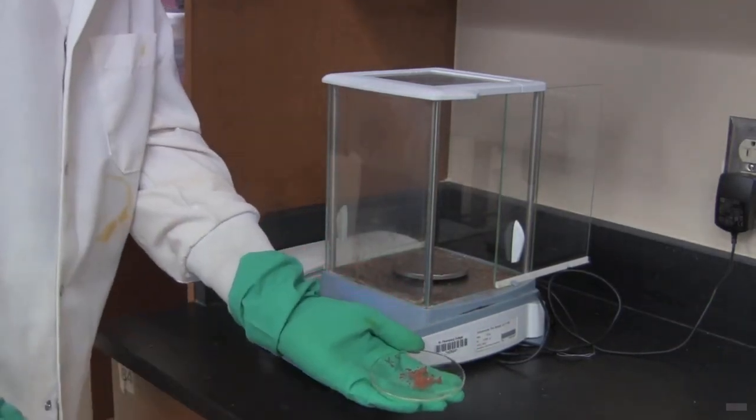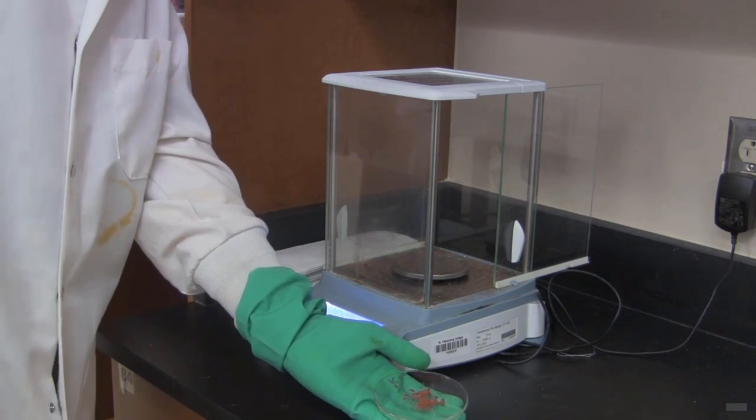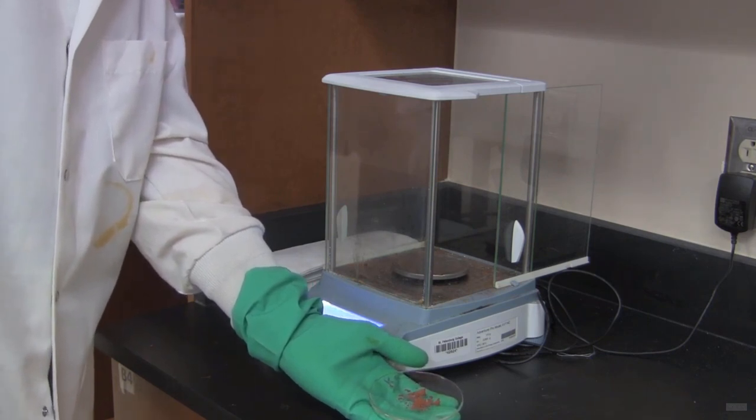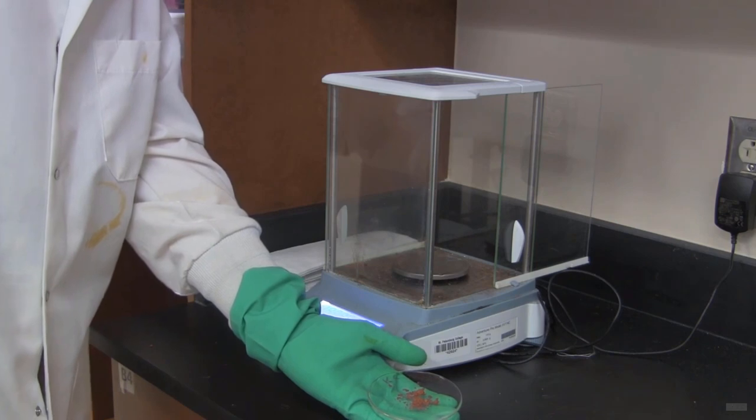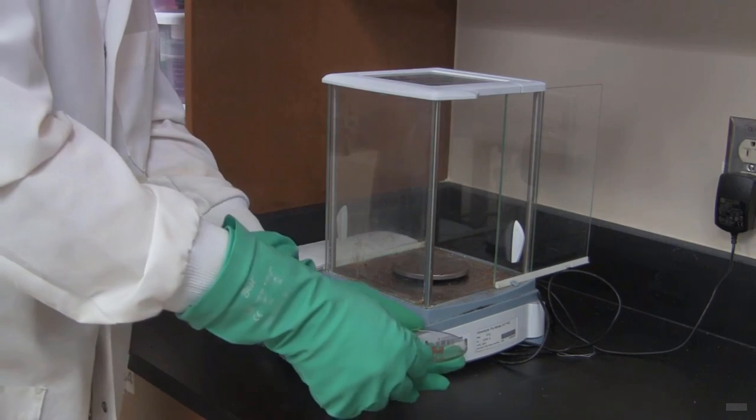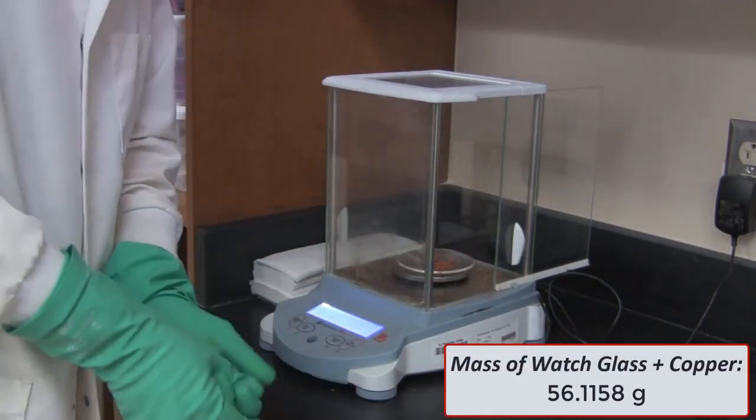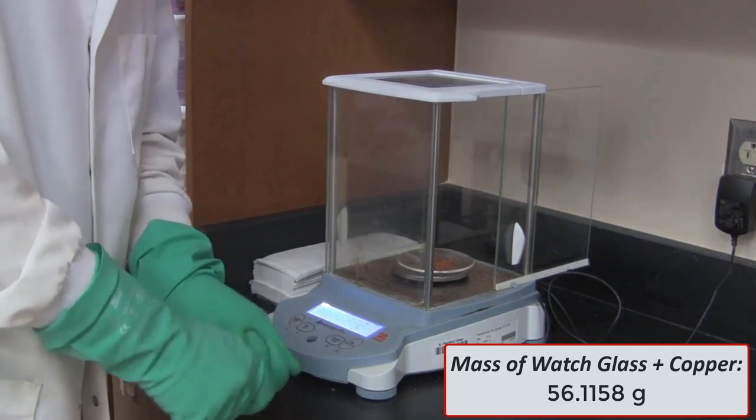So now we've got our copper. It's been dried. And I've taken it out of the oven. And I've let it cool for a few minutes. It's never a good idea to weigh anything while it's hot. So it's been taken out of the oven. It's been cooled for a bit. And now what I'm going to do is weigh it on the balance. And that's going to allow us to come up with our mass of copper.